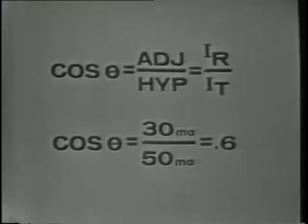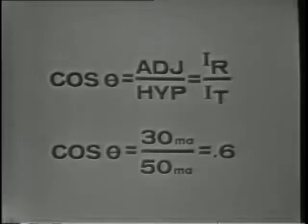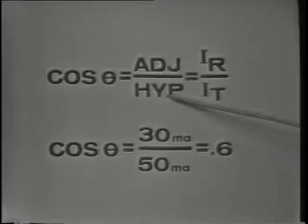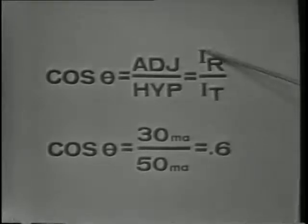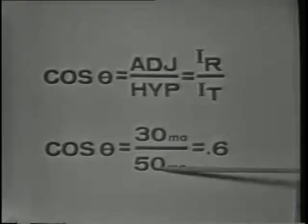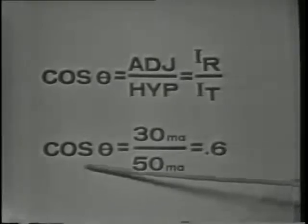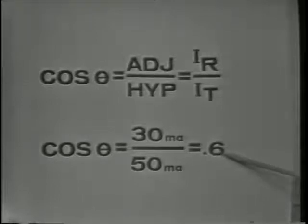Let's see how these relationships are derived. The sine of angle theta is found by dividing the opposite by the hypotenuse, or IC over IT. The cosine of angle theta equals the adjacent side over the hypotenuse, or IC divided by IR. In each case when the division is accomplished, the sine, cosine, or tangent will equal a whole number or decimal fraction that may be used to locate the phase angle in the trig tables.